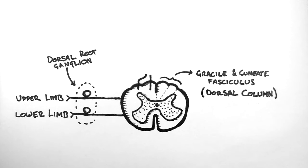Obviously these two axons would enter the spinal cord at different levels. The lower limb more caudally and the upper limb more rostrally. But I've shown them here in the same segment for simplicity.